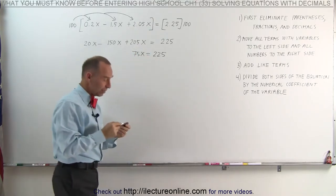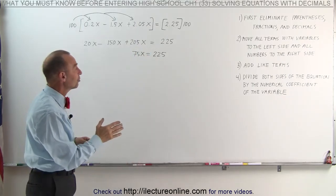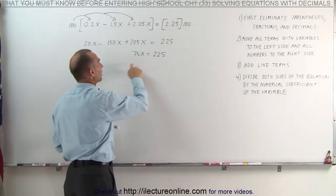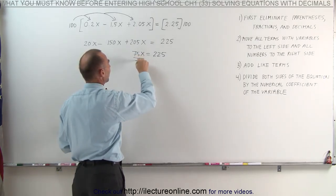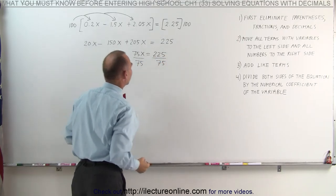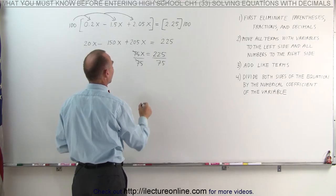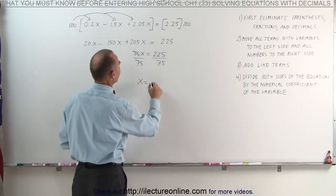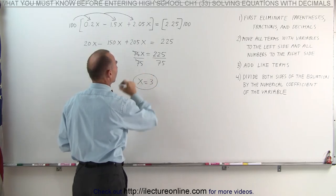And finally, the last step, we need to divide both sides of the equation by the numerical coefficient on the left side here. The numerical coefficient is 75, we divide the left side by 75, and we divide the right side by 75. That eliminates the 75's, and we're left with x is equal to 225 divided by 75, which is equal to 3.